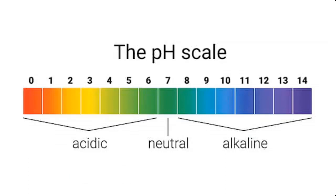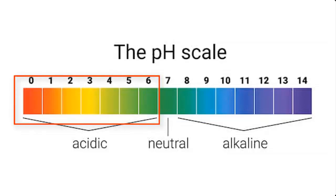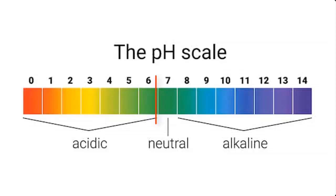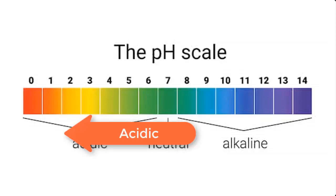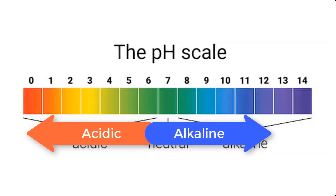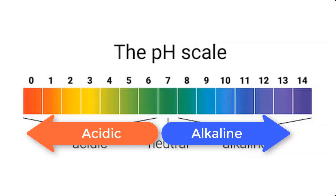An example of a neutral solution is water. pH is expressed on a number scale ranging from 0 to 14. 0 to 6 is the acidic part of the scale, and 8 to 14 is the alkaline part of the scale, while 7 stands for neutral. Acidity increases from 6 to 0, meaning 0 is more acidic than 1, and 1 is more acidic than 2. On the other hand, 8 is less alkaline than 9, and 9 is less alkaline than 10.